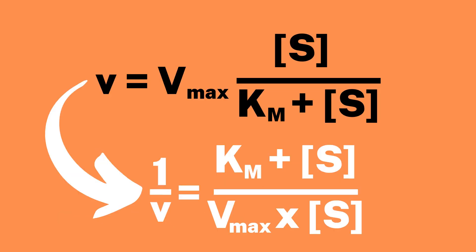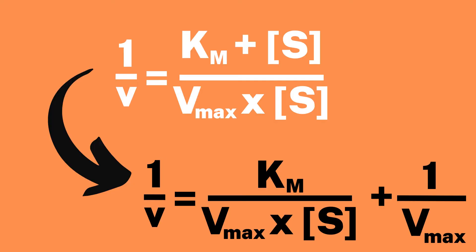If this equation is inverted, we get 1 over v equals Km plus [S] over Vmax times [S]. This can be further modified so that we instead get 1 over v equals Km over Vmax times [S] plus 1 over Vmax.